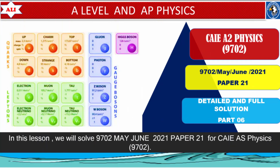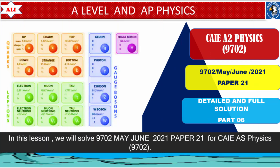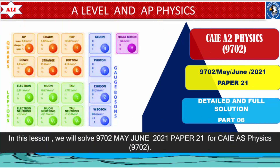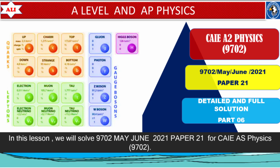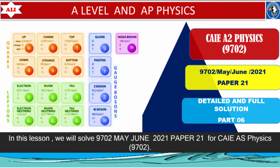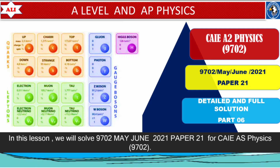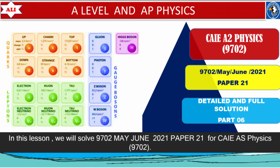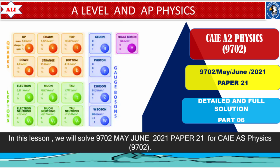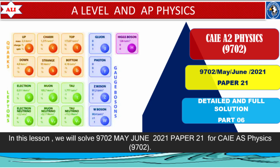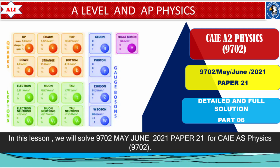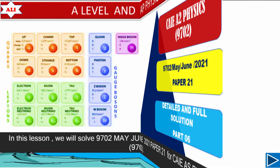Welcome to A-Level and AP Physics. In today's lesson we will discuss a typical type of question on standard models from May/June 2021 paper 2.1. This is a typical type of question because these types of questions are very common in past papers and have been asked many times.